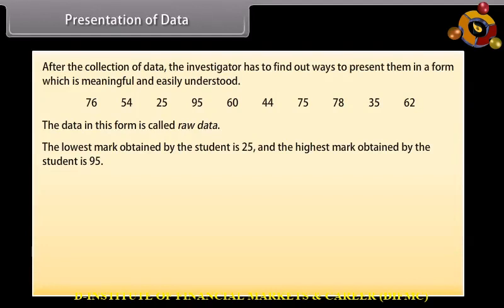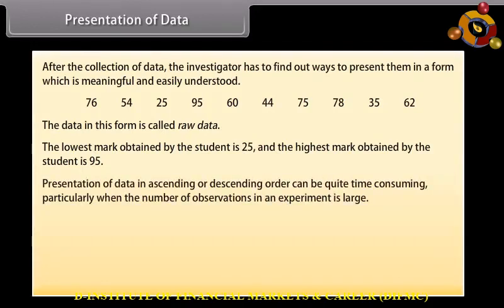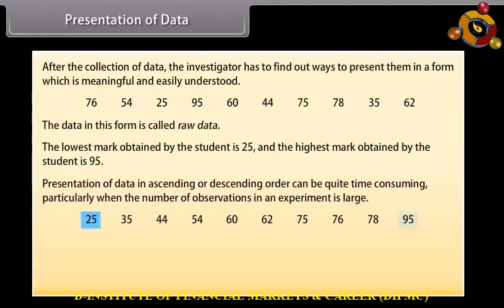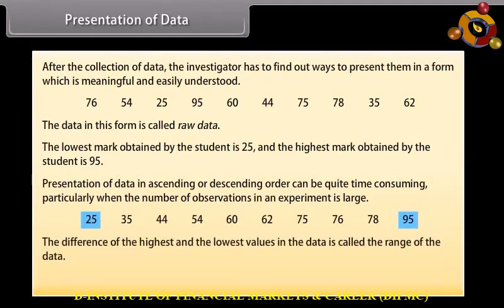If we write these numbers in ascending or descending order, it would be easy to see the highest or lowest marks. Presenting data in ascending or descending order can be quite time-consuming, particularly when the number of observations is large. In ascending order, we can clearly see that the lowest marks are 25 and the highest marks are 95. The difference between the highest and lowest values in the data is called the range. So the range in this case is 95 minus 25, which equals 70.